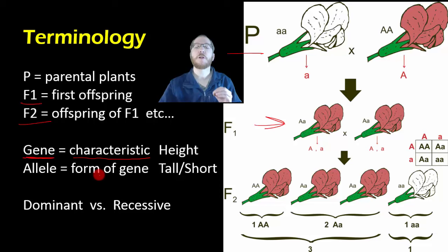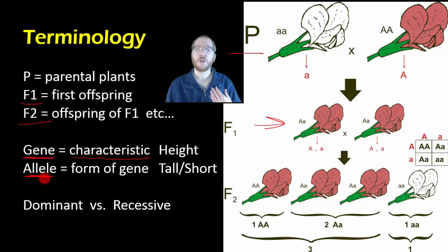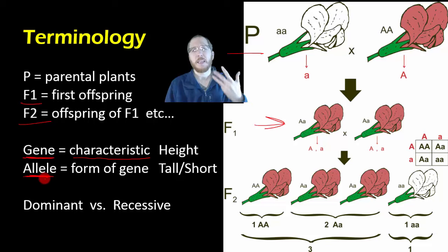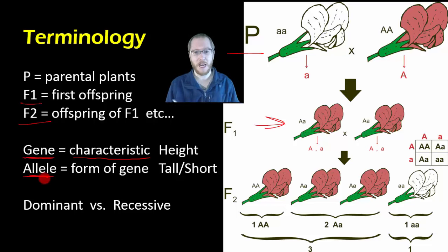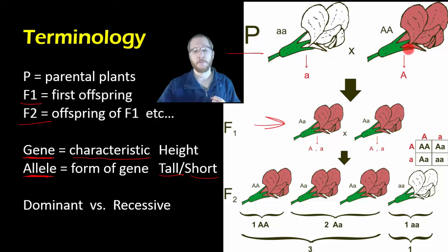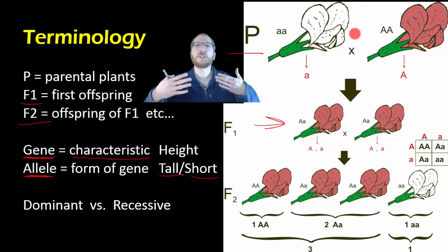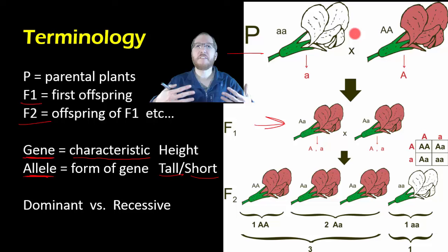For each gene, there appeared to be different possibilities. Mendel called those 'traits' or 'forms'; we call them alleles. When we talk about hair color in humans, the alleles could be red, blonde, brown, or black — even though it's not actually that simple for human hair color. In height, if that's our gene, the alleles could be tall or short. If it was flower color, the alleles would be white or purple.